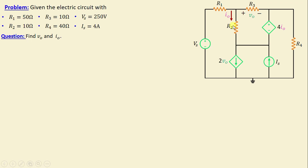Let's move on to the solution. We are going to apply the super mesh analysis in order to solve this problem. First, let's begin by defining the number of meshes in this network. It's evident that there are four meshes: mesh number 1, mesh number 2, mesh number 3, and mesh number 4.